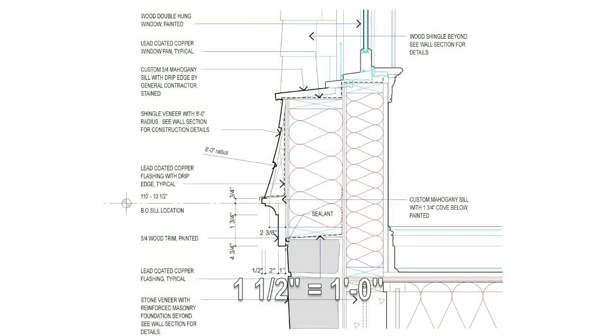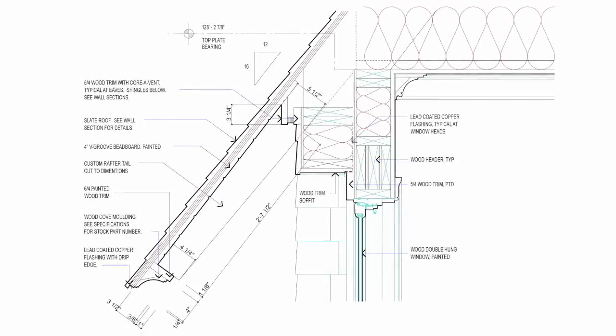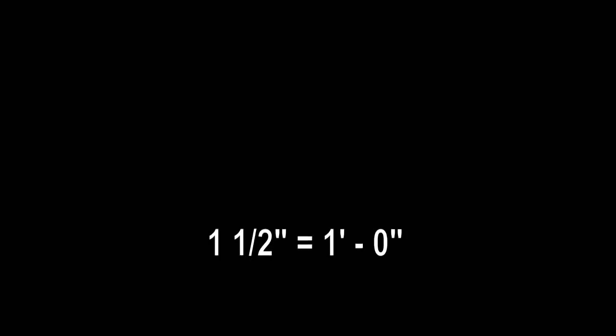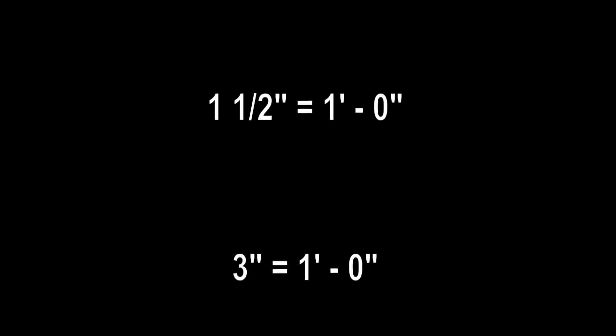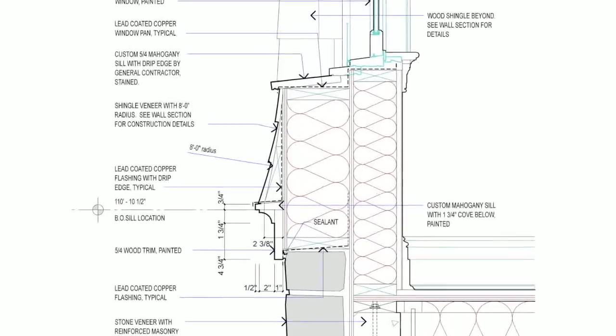Details are typically shown at the largest scales — one and a half inches, three inches, six inches, which is half scale, or full scale. I'll cover more about scale in Part 6. The reason for a large scale is obvious: the larger the drawing on the page, the more detail for the contractor.